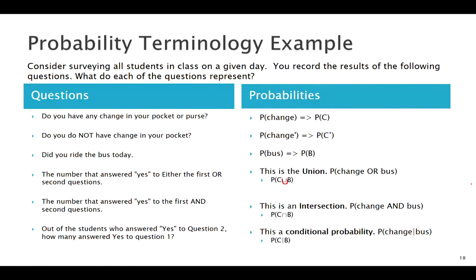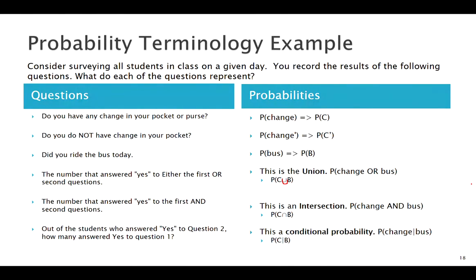Hopefully this helps you sort out all the terminology - complements, unions, intersections, conditional probability. We're not necessarily going to find many of these probabilities right now. We'll see how to apply a bunch of these rules in the future, but let's try to apply our simplest probability rule, our complement rule.